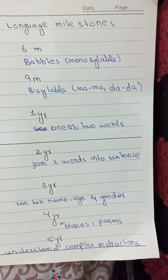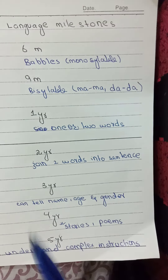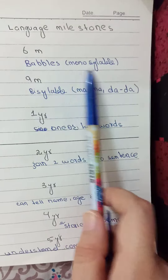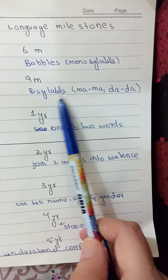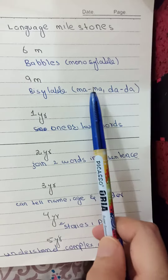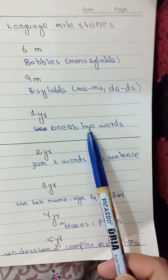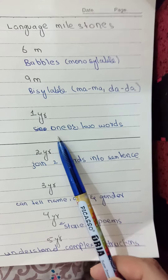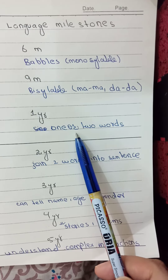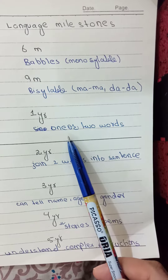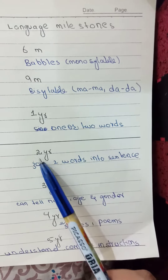Let's talk about the development of language skills. At the age of six months, a baby can babble in monosyllables only. At the age of nine months, he starts babbling in bisyllables, like 'mama' or 'dada'. At the age of one year, he can say one or two meaningful words — so word formation begins at the age of one year.